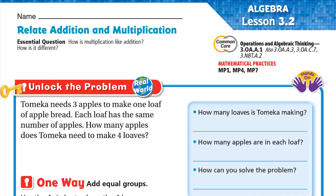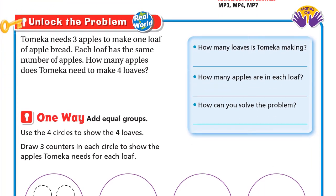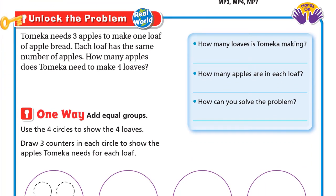Hello, this is Mr. Ahmed and today we'll do lesson 3.2: Relate Addition and Multiplication. Our essential question is: how is multiplication like addition and how is it different? So let's unlock the problem. Tomeka needs three apples to make one loaf of apple bread, and each loaf has the same number of apples. How many apples does Tomeka need to make four loaves?